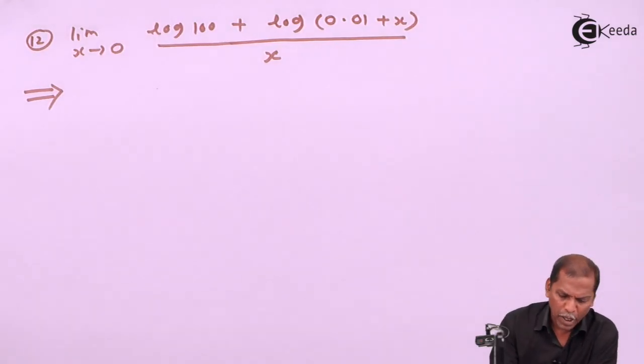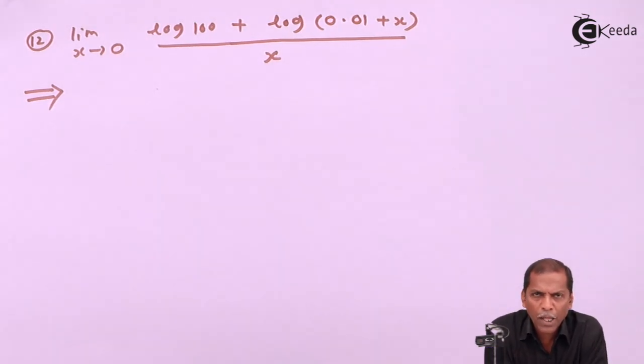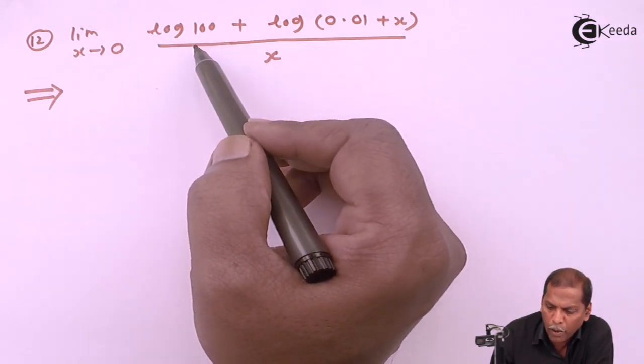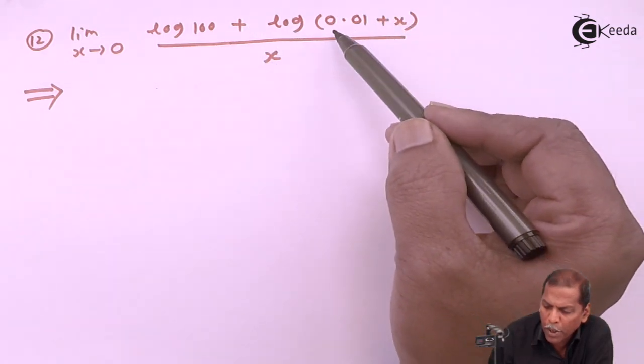Hello friends, now we see problem number 12, which is also based on limits of exponential and logarithmic functions from the chapter on limits. The problem is: limit as x tends to 0 of [log(100) + log(0.01 + x)] divided by x.